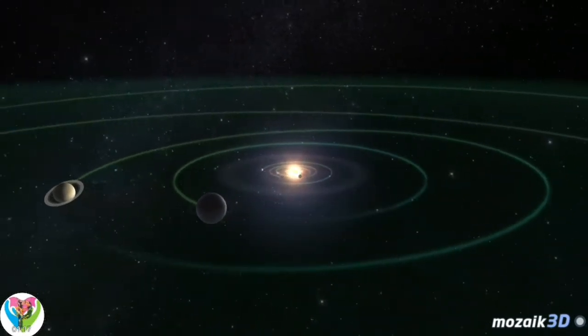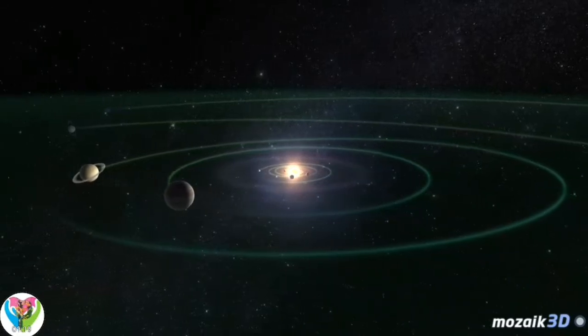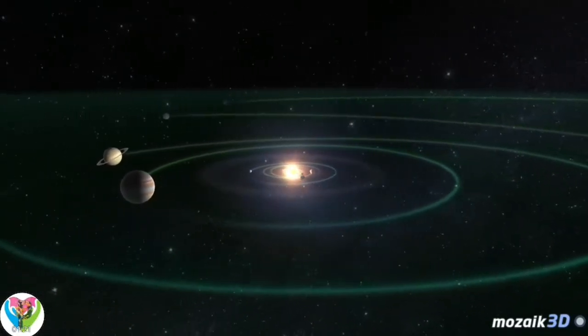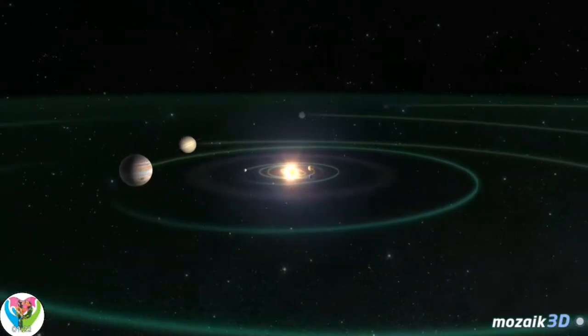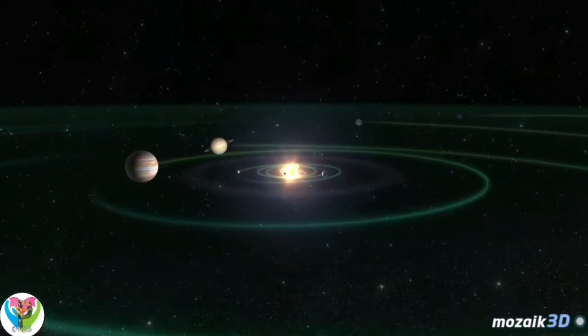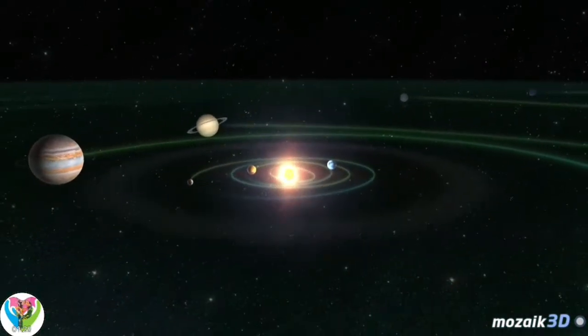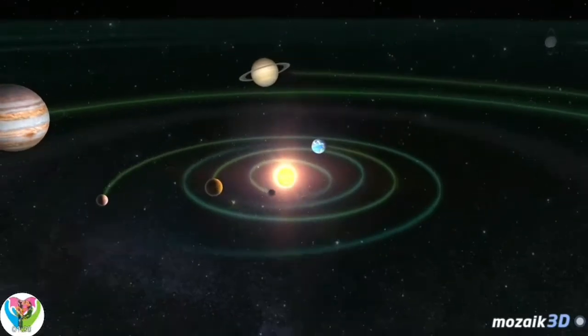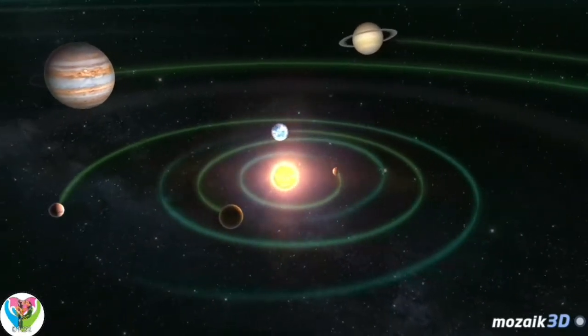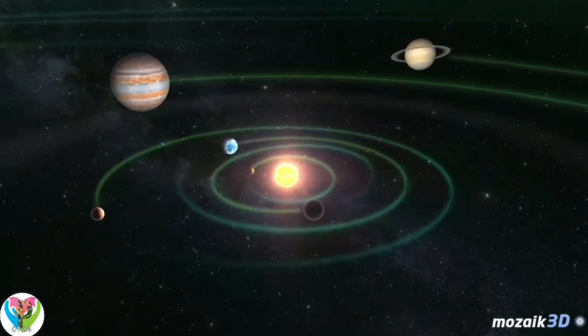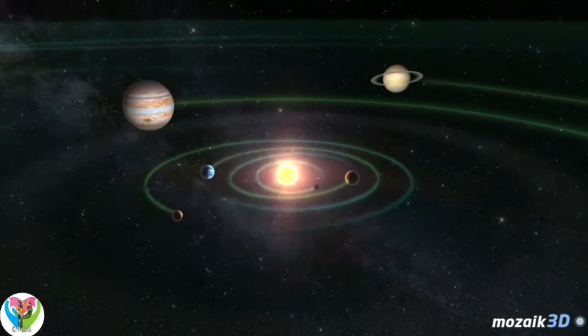The solar system is completely filled with solar wind, a continuous flow of electrically charged particles emitted by the Sun. The solar system consists of the Sun, the planets, the moons of the planets, asteroids and comets, meteorites and interplanetary matter, i.e., dust and gas.